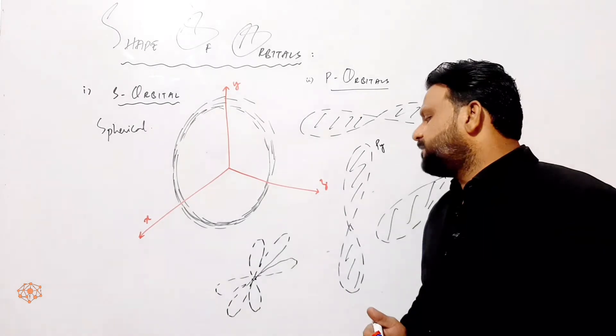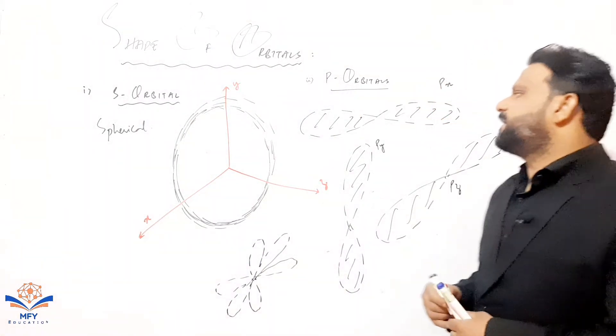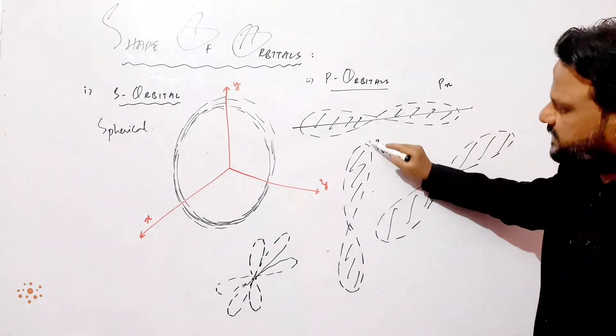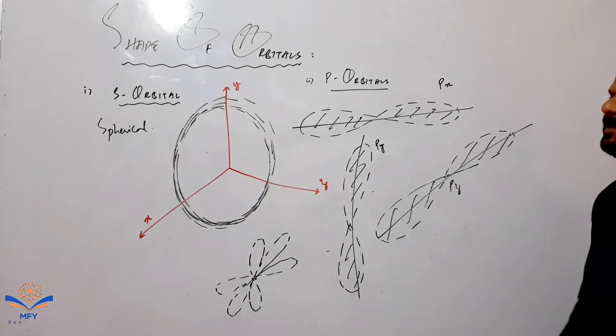Separately you can easily understand: px follows the x axis, py follows the y axis, and pz follows the z axis. This means that you can easily draw the shape of orbitals which are related with s and p orbitals.